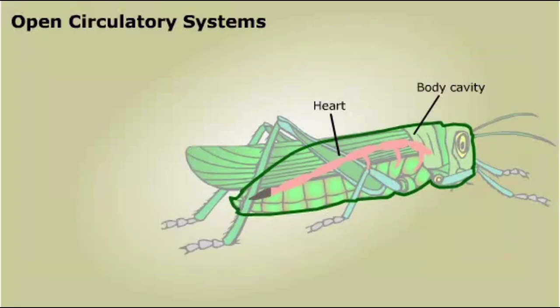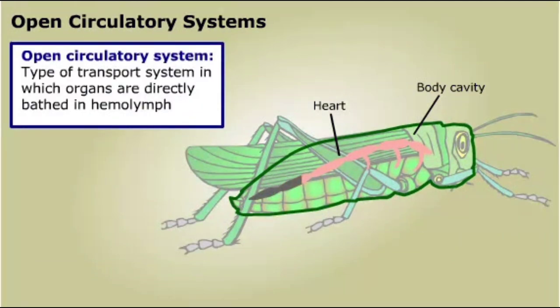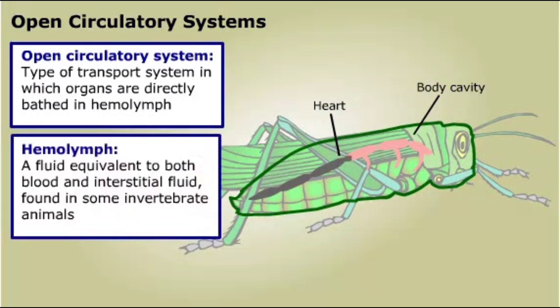Some invertebrate animals, for example insects and most mollusks, have an open circulatory system to transport food, wastes, heat, and other materials. In this type of system, a tube-shaped heart pumps a fluid called hemolymph through arteries into the main body cavity, and from there, it directly bathes the various organs.